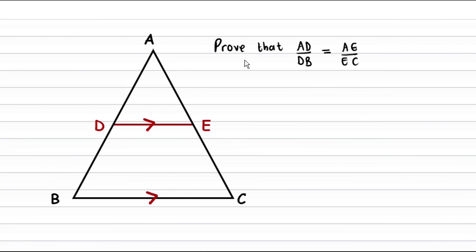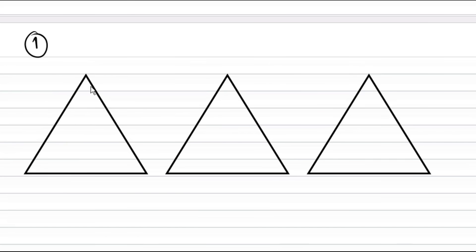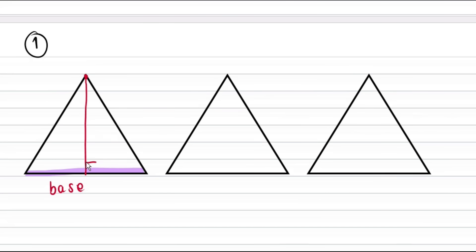To understand this proof you first have to understand three concepts about the heights and bases of triangles. The first concept: if we have an acute triangle — where all angles are less than 90 degrees — and we take one side as the base, then to measure the height we go from the highest point of the triangle down perpendicular to the base. So this would be the height of this triangle.